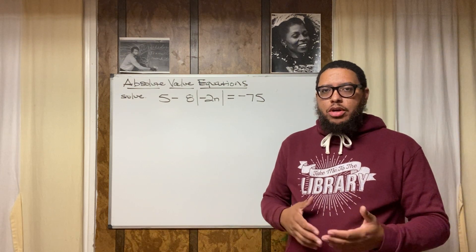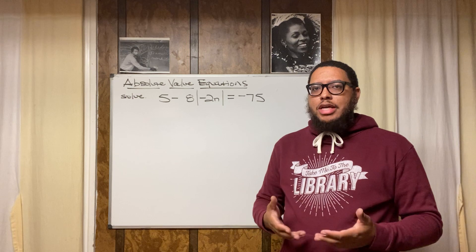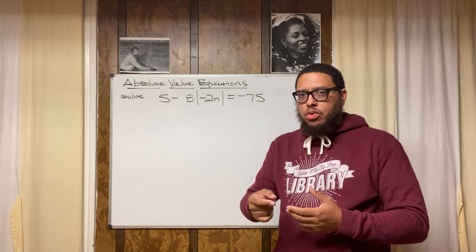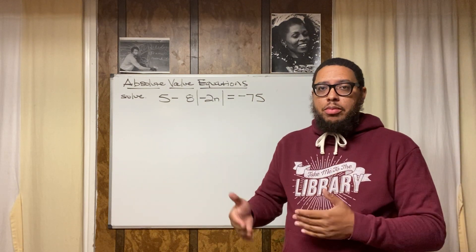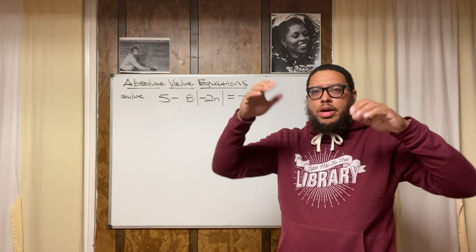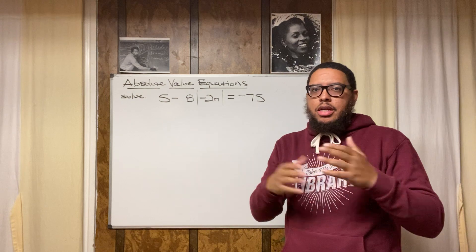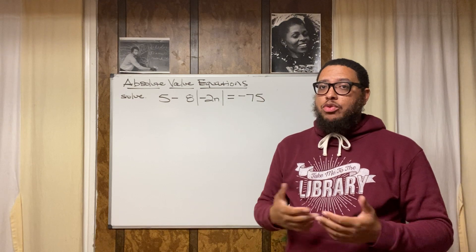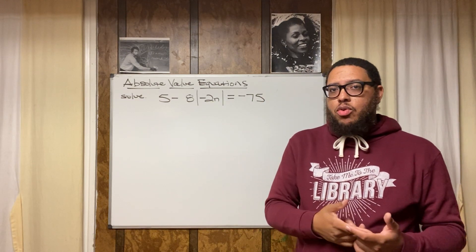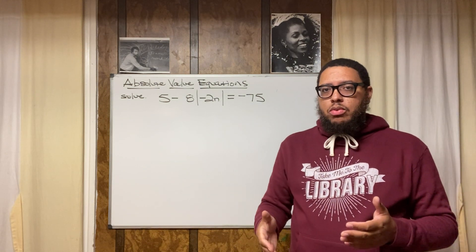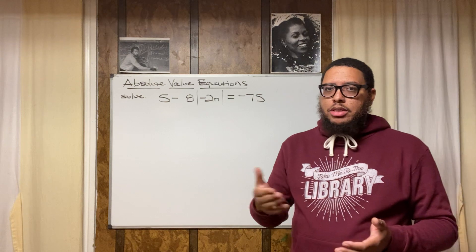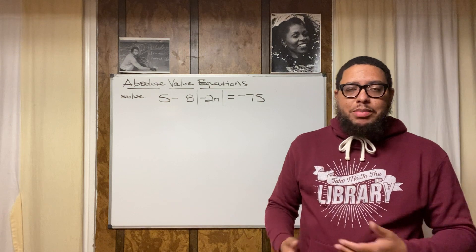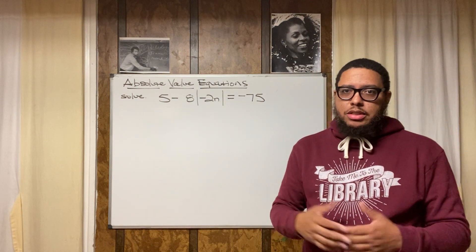A lot of times we neglect to learn definitions and mathematics vocabulary. What is the absolute value? The absolute value of any number is basically how far away from zero that number is on the number line. Picture a number line — you've got a positive side and a negative side. For example, negative four has an absolute value of positive four, because negative four is four units away from zero on the number line. That's also why all absolute values will always be positive, because distance is always a positive value.